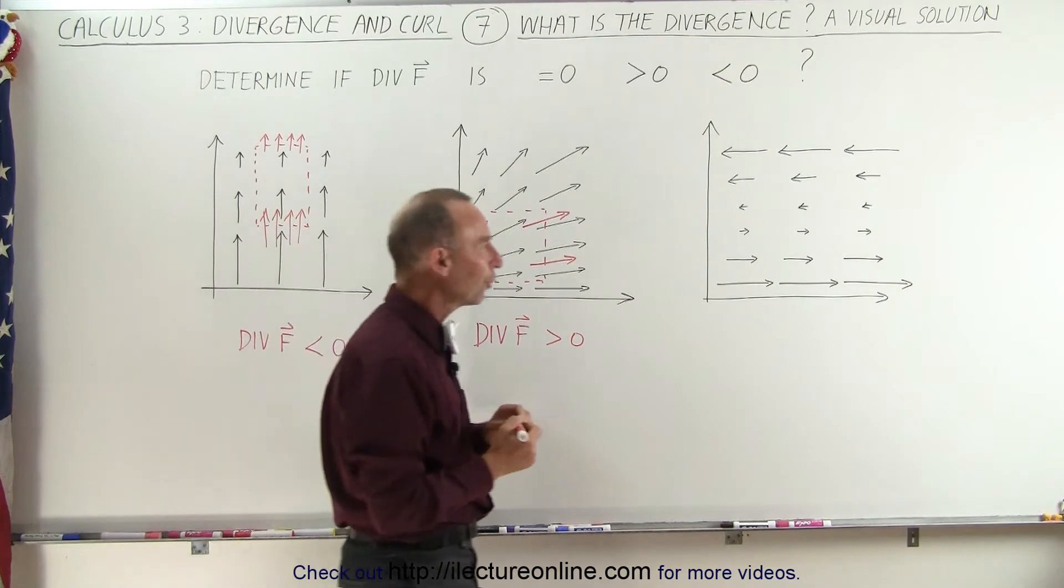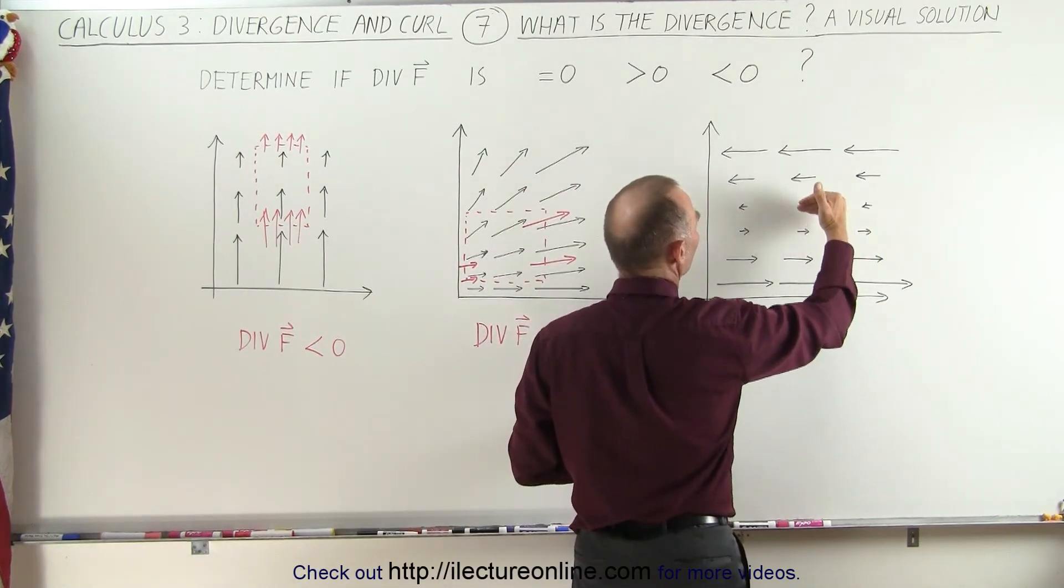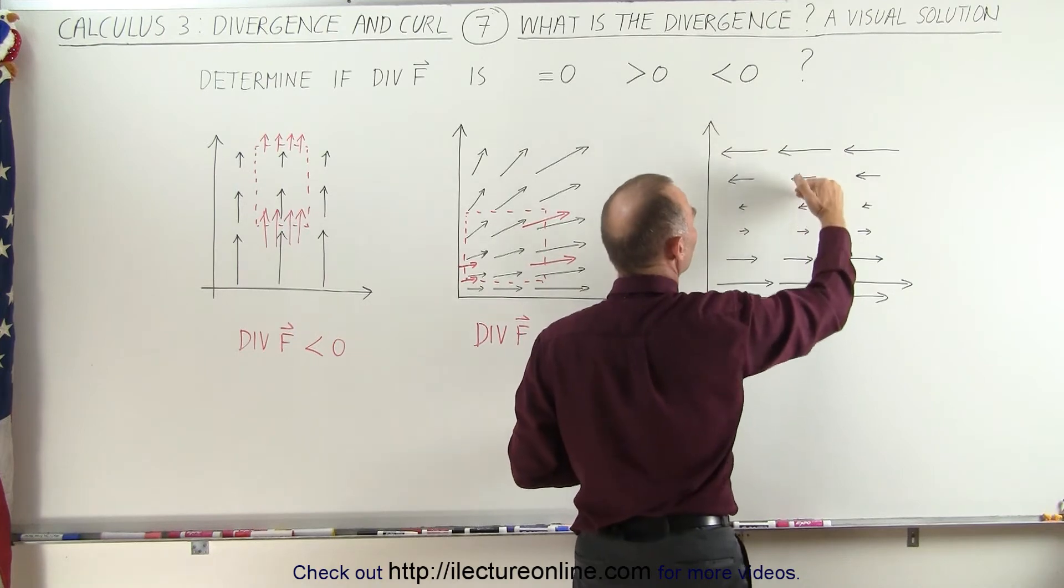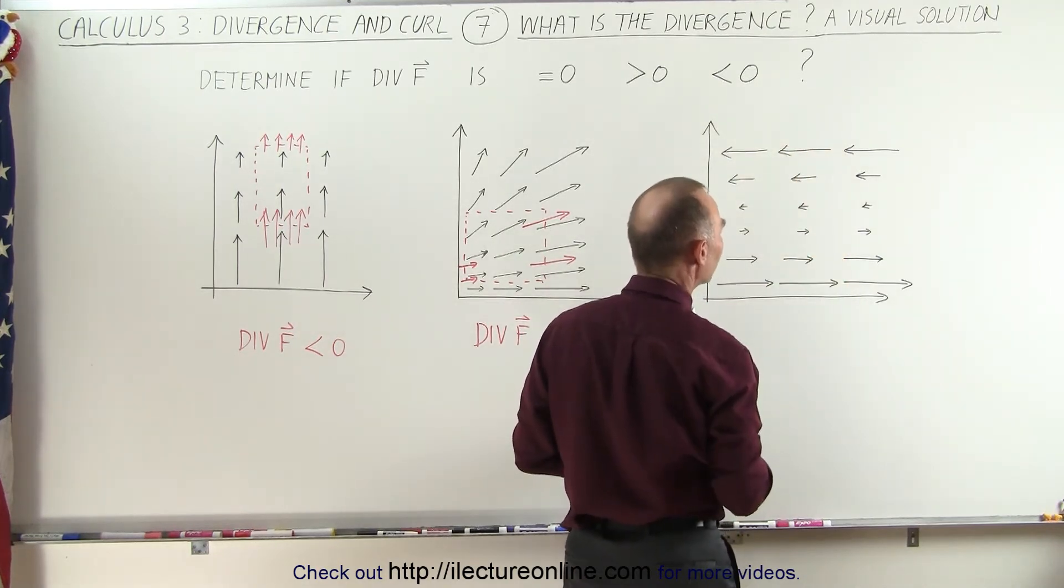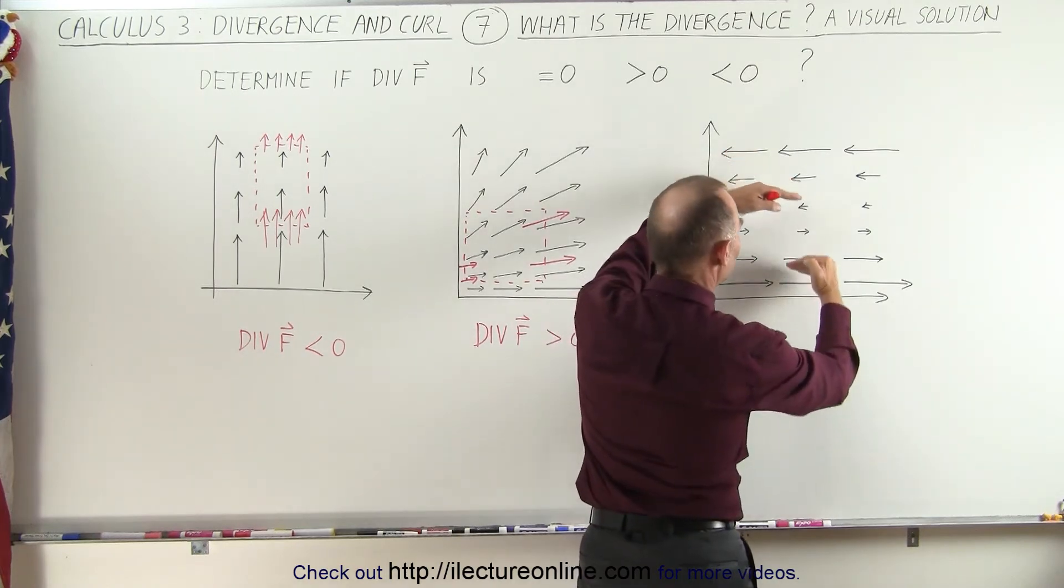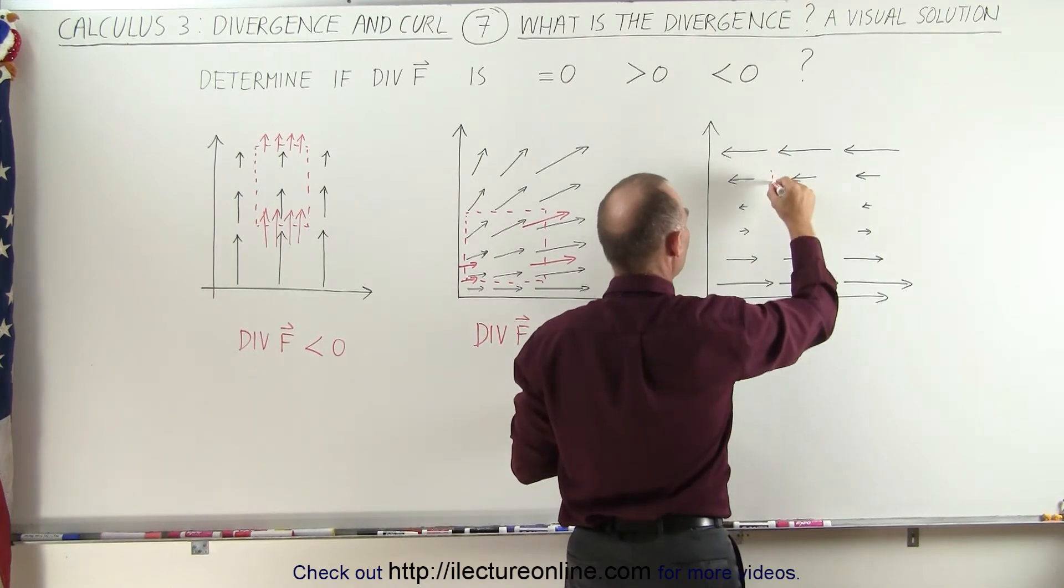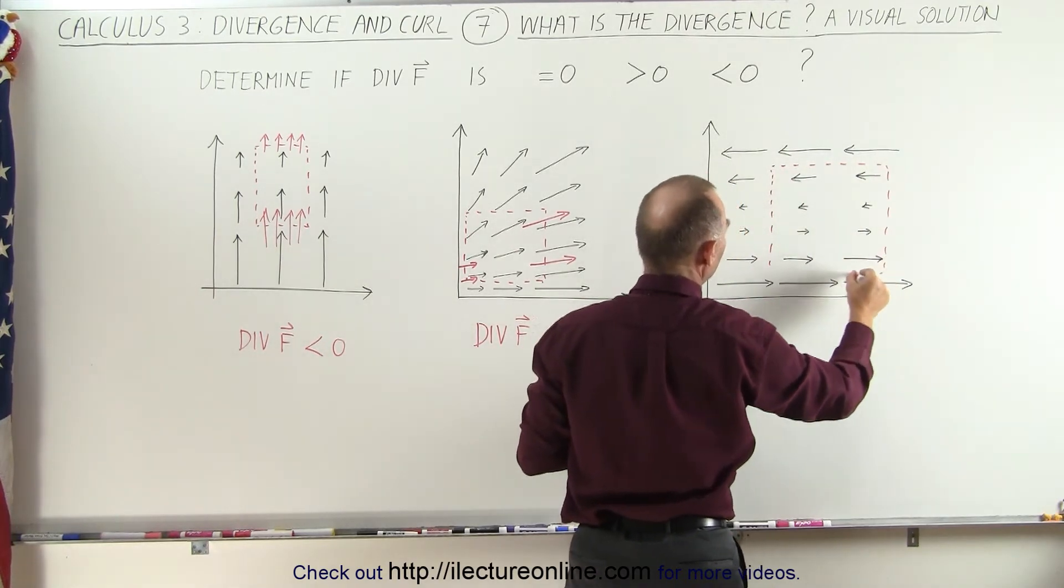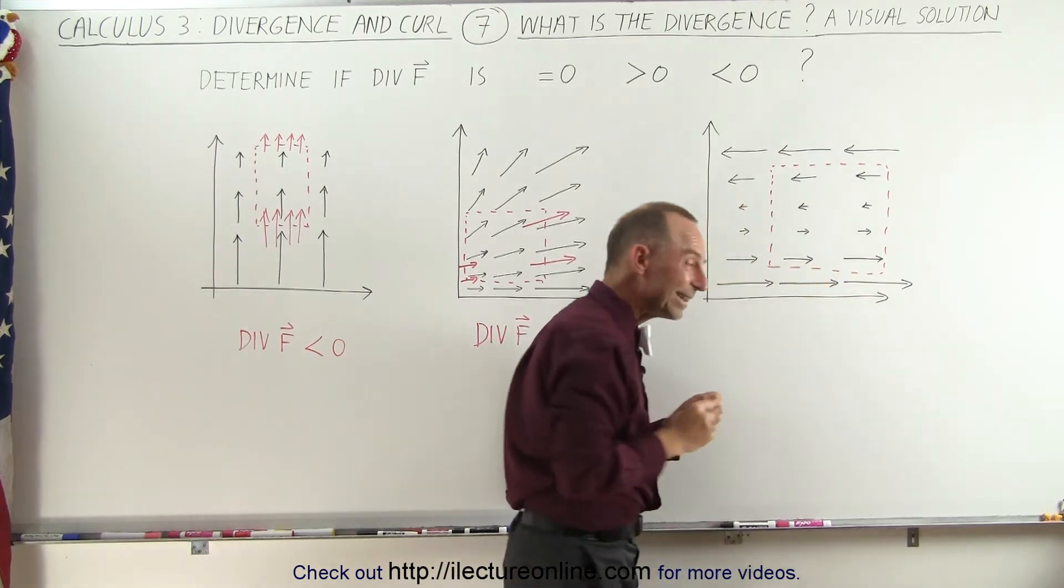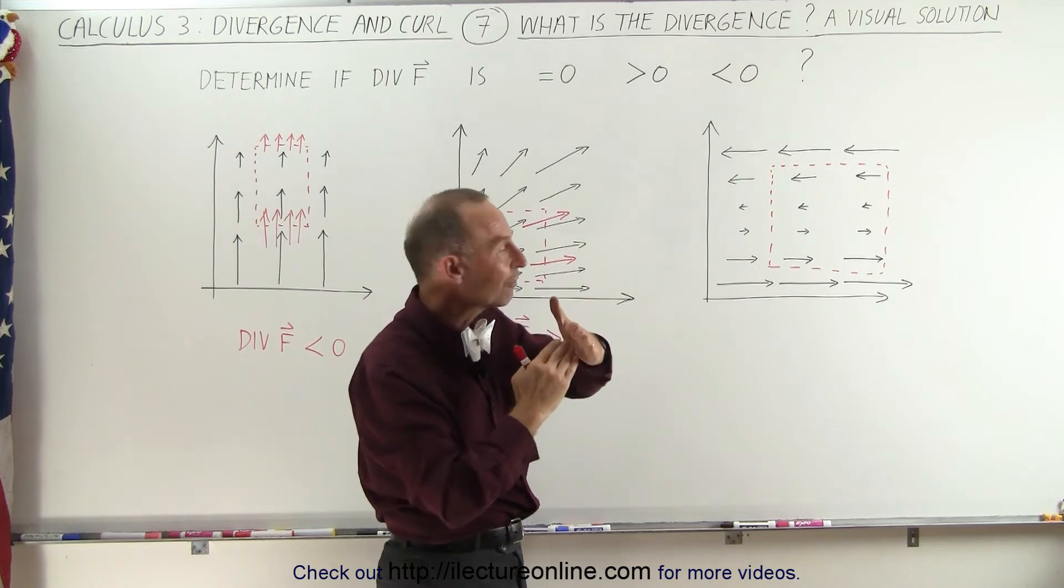But now let's take a look at our third example. It does appear as if we go higher up, the flux increases. As we go further down, the flux also increases. It diminishes as we get down to the middle here, about the line right over here. So if we draw a box, what is going to happen here?